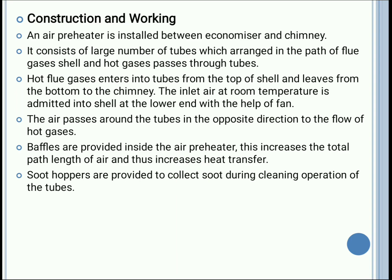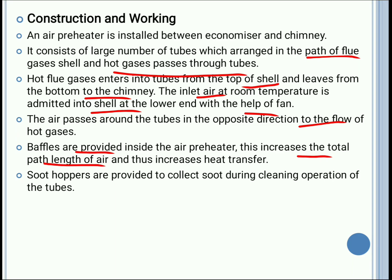An air preheater is installed between the economizer and the chimney. It consists of a large number of tubes which are arranged in the path of flue gases, and the hot gases pass through the tubes. The hot gases enter into the tubes from the top and leave through the bottom, whereas the inlet air enters at the lower end with the help of a fan. The air passes around the tubes in the opposite direction to the flow of hot gases. Baffles are provided inside the boiler, which increases the total path length of air and thus increases the rate of heat transfer. Soot hoppers are provided in order to collect the soot.